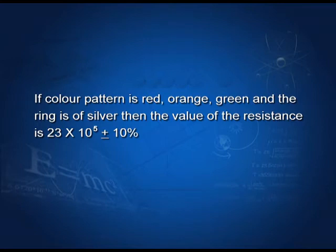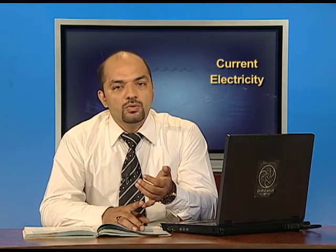Here 10% is the tolerance represented by silver. Tolerance is represented by golden, silver, or no color. If the ring is gold, the tolerance is 5%. If silver, then 10%. If there is no color on the ring, then the tolerance is 20%.